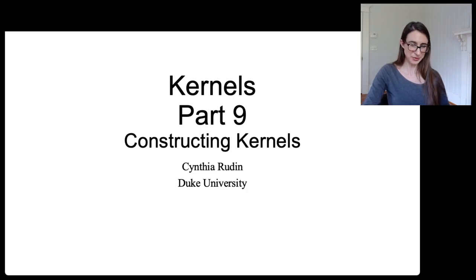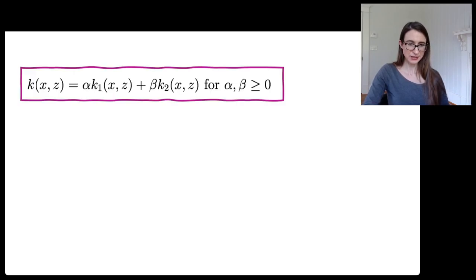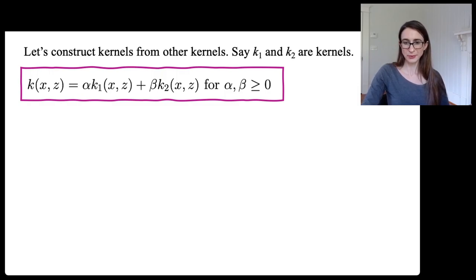Let's have fun constructing kernels from other kernels. So let's start with K1 and K2, which we assume are valid kernels, and as it turns out, a linear combination of them with positive coefficients is also a kernel.